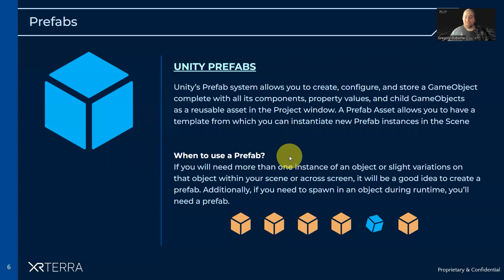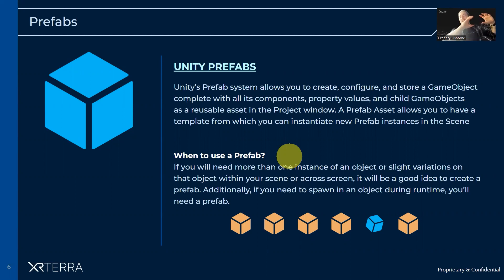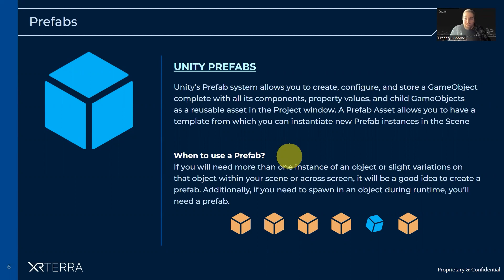So what is a prefab? A prefab is a saved asset of a game object — basically a way to save a game object. Normally you use game objects in your scene hierarchy, but you can drag that game object from the scene hierarchy into your project window to essentially save a copy of this game object for use in other parts of your project, or to duplicate it as much as you want, either before you start playing or during runtime.